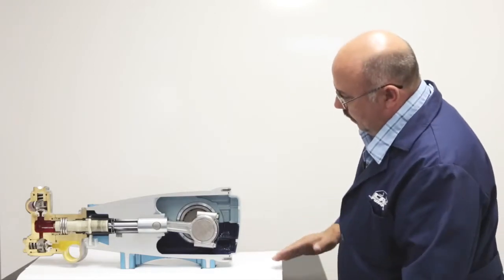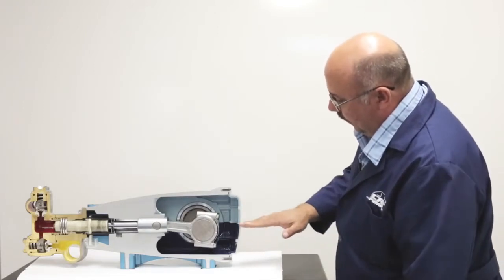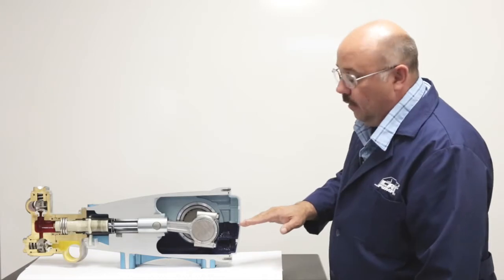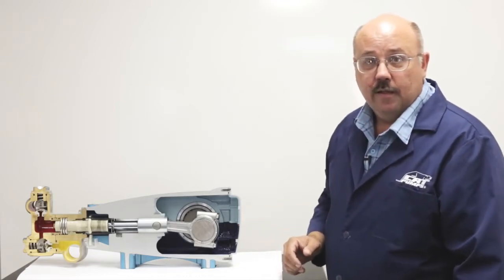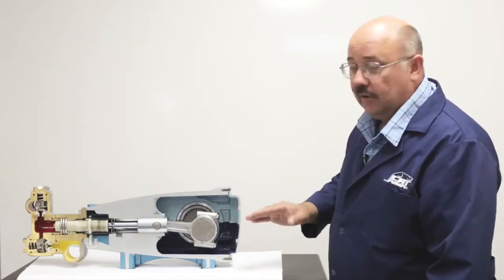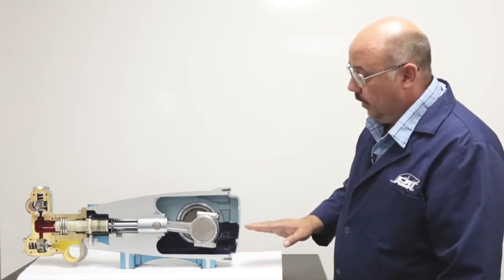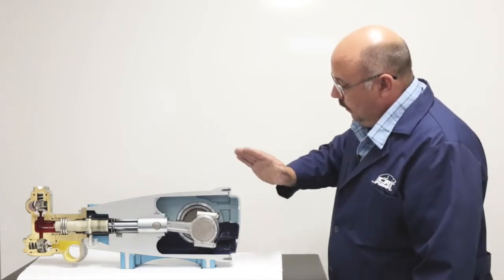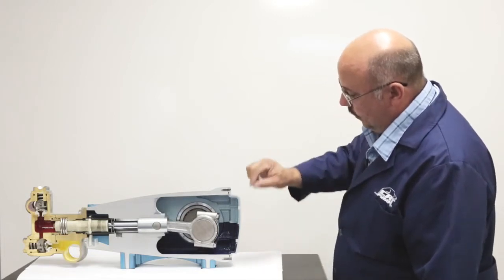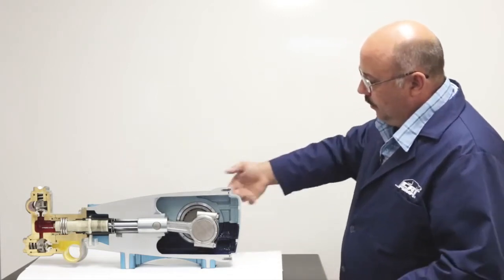Once we get our pump ready to run and we fill it up to here with Cat Pumps oil, which is specially formulated to work with our materials of construction and the loading to give optimal lubrication for all the parts, it's filled up halfway on a bubble gauge or the dipstick and then we start running our pump.